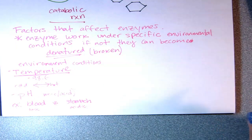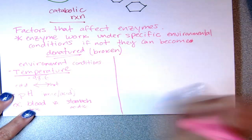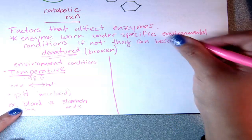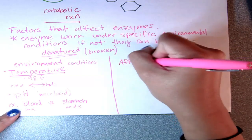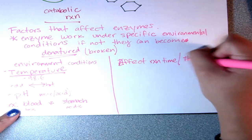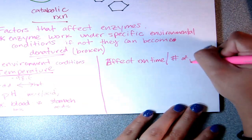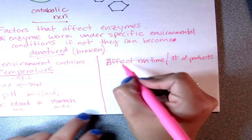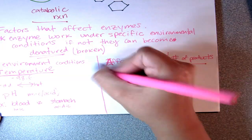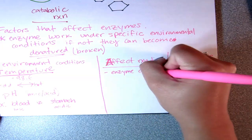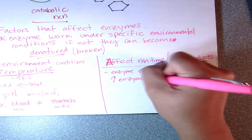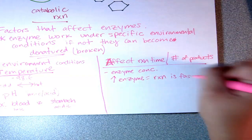Other things that affect how well enzymes work include enzyme concentration and substrate concentration. If you have a high amount of enzymes, the reaction is going to be faster because you have more things working.